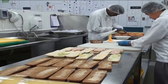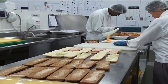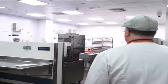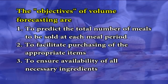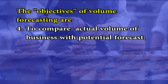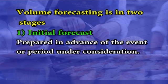Volume forecasting. Forecasting is using the available data to predict what is likely to occur in the future. In the food industry, which deals with highly perishable products, this advance planning is very important. The objectives of volume forecasting are to predict the total number of meals to be sold at each meal period, to facilitate purchasing of the appropriate items, to ensure availability of all necessary ingredients, and to compare the actual volume of business with the potential forecast.